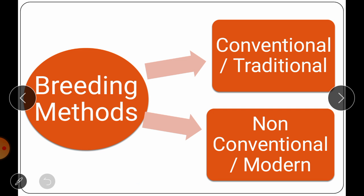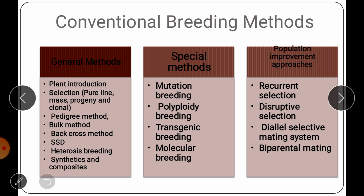Breeding methods are of two types. Conventional breeding methods — also called traditional or classical breeding methods — involve crossing between closely related individuals or interbreeding, followed by selection among the progenies. Non-conventional breeding methods involve wide crosses as well as new approaches such as genetic engineering, transgenic breeding, etc. Conventional breeding methods are further divided into three types: general breeding methods, special breeding methods, and population improvement approaches.